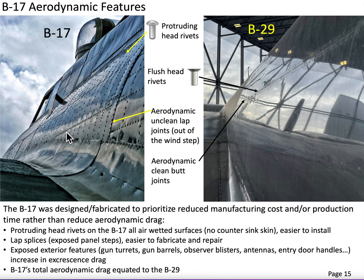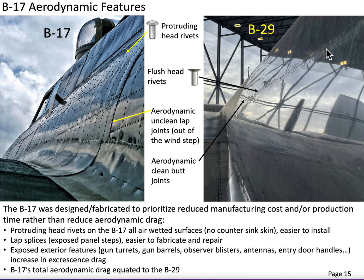Notice the aerodynamic rivet heads protruding out from the skin surface. These are universal head rivets, which are fairly easy to install. However, as the air scrubs past the surface at about 240 miles an hour, that induces what we call excrescence drag on the surface, building up to quite a bit of aerodynamic drag. The B-29, by contrast, used flush countersunk head rivets — 100-degree countersinks that had to be machined into the skin before the rivet could be installed.